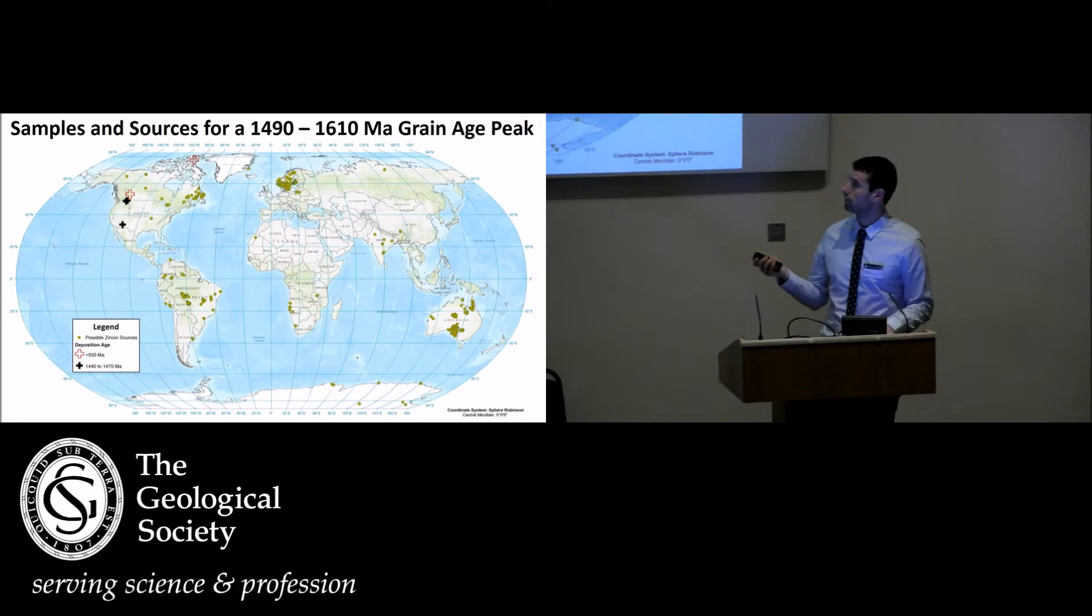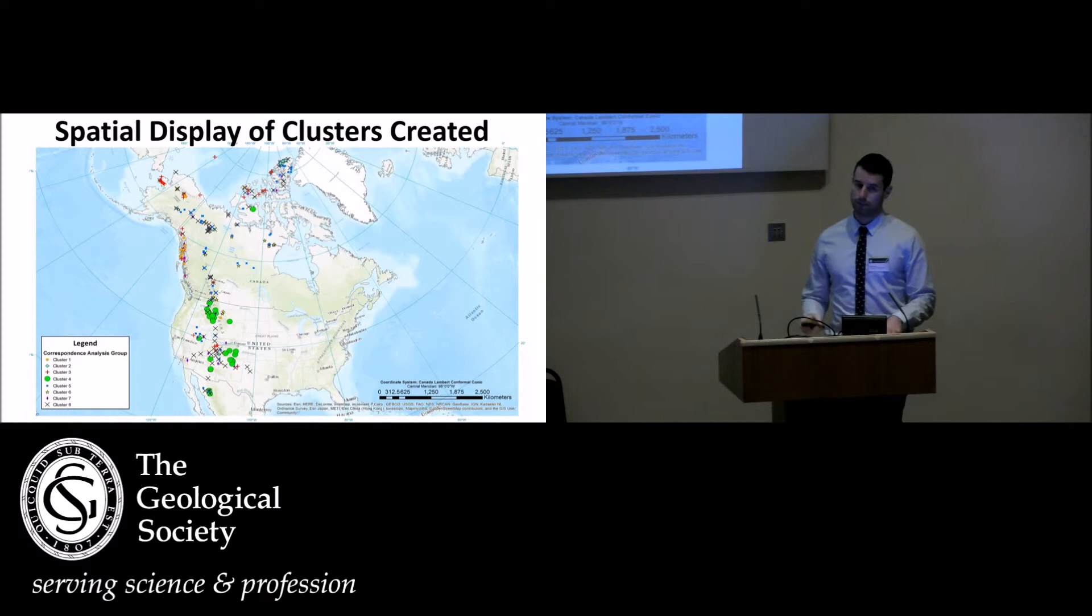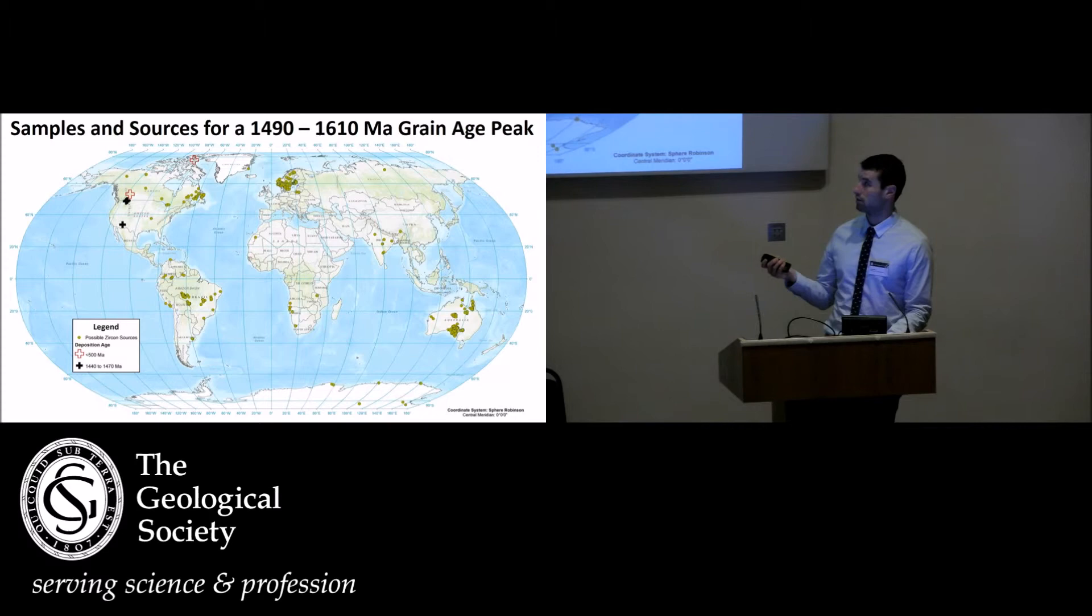I've extracted all my samples that have high probability peak grain ages of that same North American magmatic gap. I don't have as many samples—there's only a few here because in the previous slide, the clusters are picking up samples that have any amount of the North American magmatic gap, whereas these samples have high amounts.